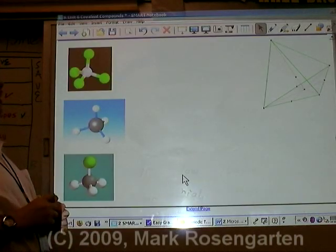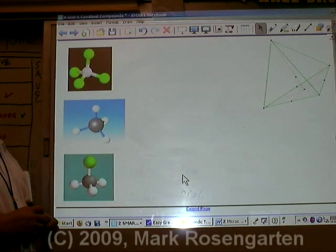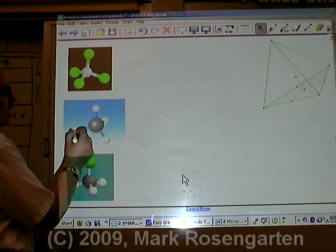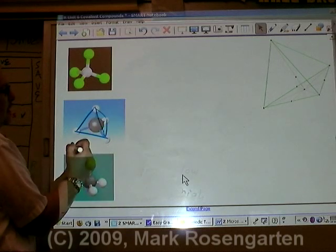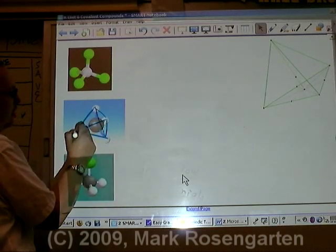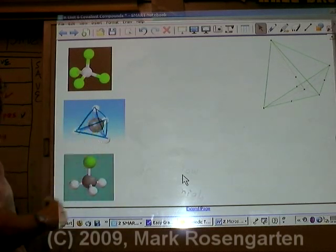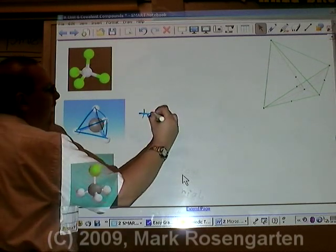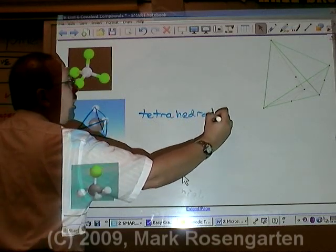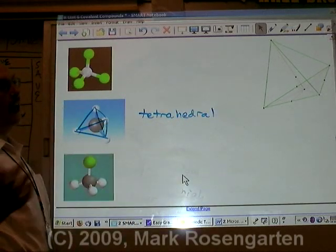And the final shape we'll do in here is when we have a molecule that makes a four-sided object. One side, the second side, third side, and fourth side. A four-sided object known as a tetrahedron. The shape is tetrahedral, otherwise known as four-sided.